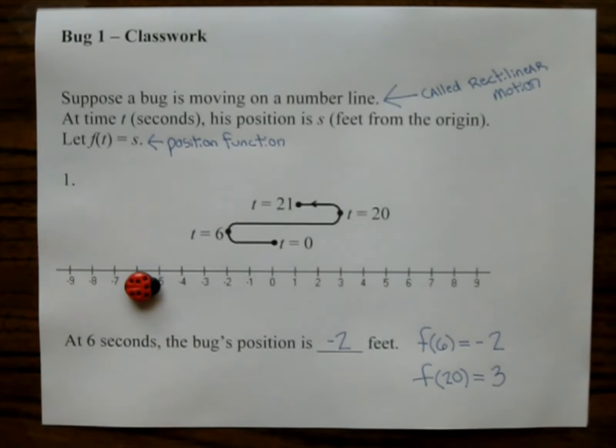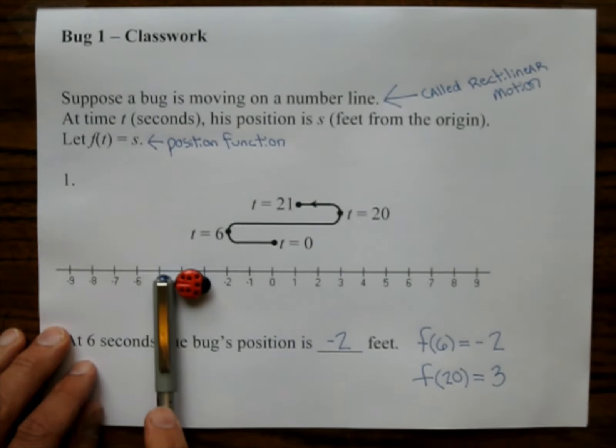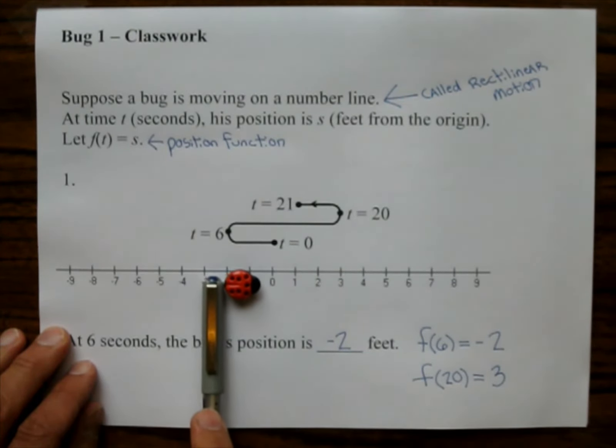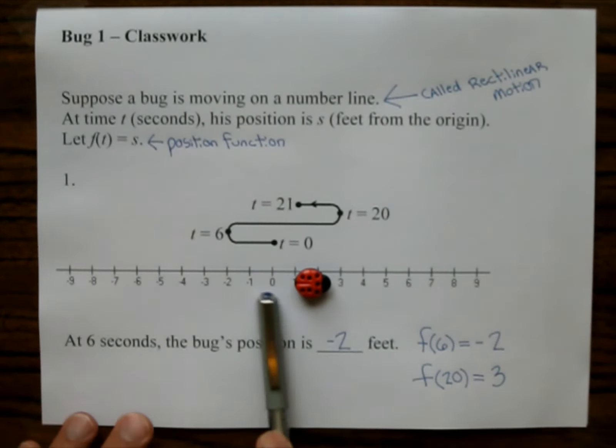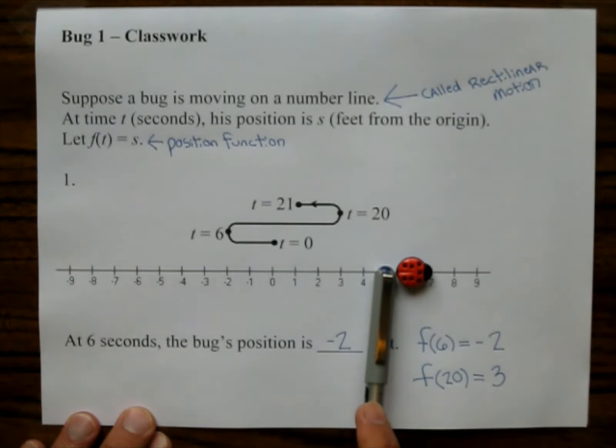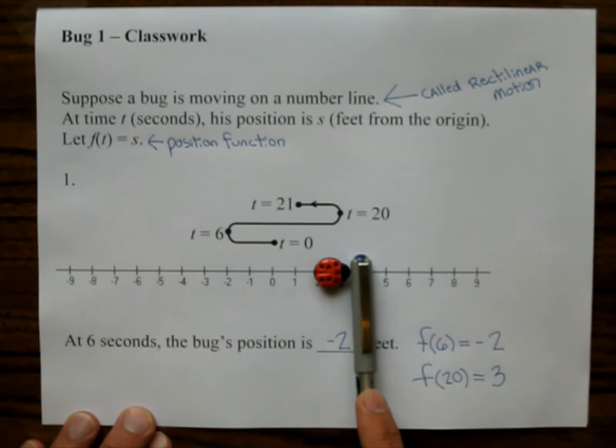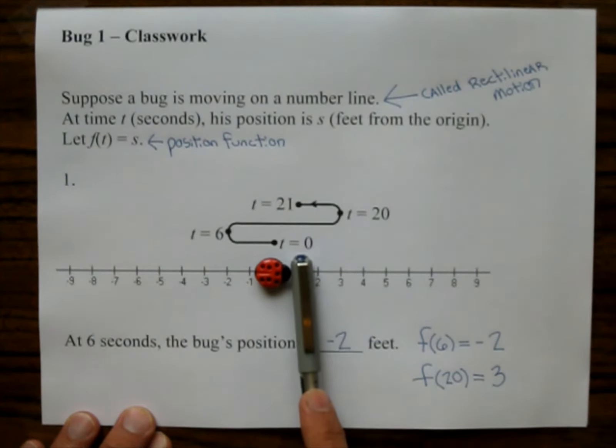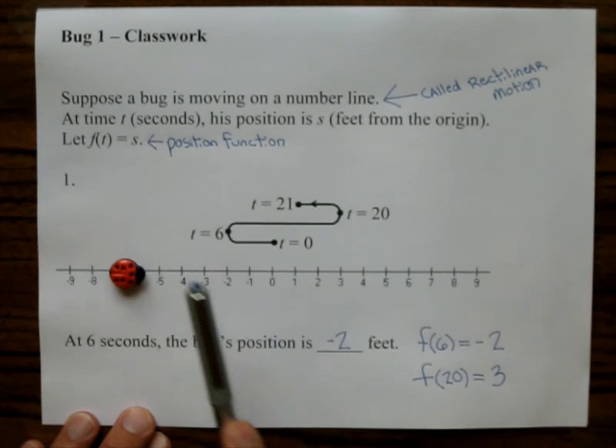And this is what we're going to study. We're going to study the bug going back and forth. Now when the bug is traveling this way to the right, he has a velocity. And we'll talk about velocity more later on. But his velocity as he goes to the right is positive. As the bug goes to the left, and this is going to be weird for some of you, his velocity he's backing up is a negative velocity. So that is the deal with velocity.